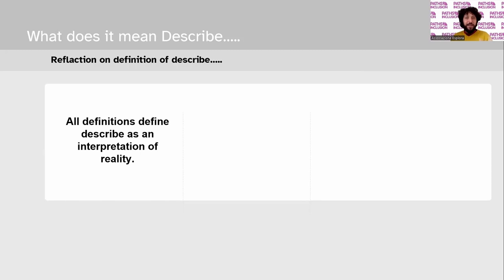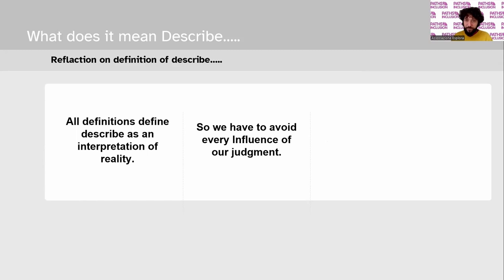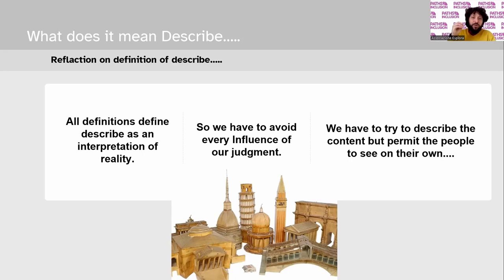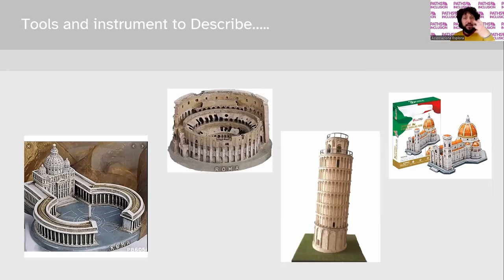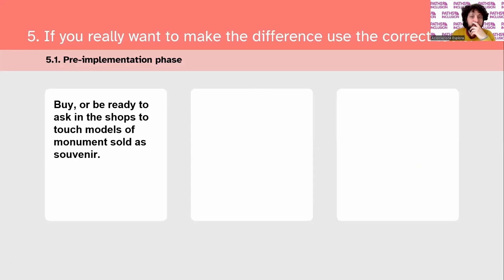We speak a lot, we give our words, and we bring inward something that is visible and visual — but this is of course our interpretation of reality. The whole definition of describing says that describing is the interpretation of reality. So we have to avoid every influence or judgment in our describing process, and try to describe content that permits our traveller to form their own picture. For example, souvenir tactile objects — showing the Colosseum, the Duomo in Florence, the Tower of Pisa, the Vatican Square — are amazing, because the traveller can touch the Colosseum and quickly understand how it is made, how it looks today. If you really want to use this tool when preparing your tour, it could be a good idea to buy those souvenir models.